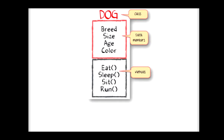If a class is there — say, dog is a class — what data members it may have? It may have breed, size, age, and color as data members. Every dog has a breed, a size, an age, and a color. As for methods, they represent the different behaviors of a dog — eat, sleep, sit, run. These are different behaviors. So, this is nothing but a class, which is a blueprint, a template for a dog.